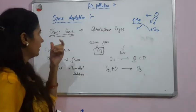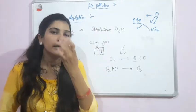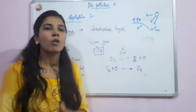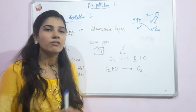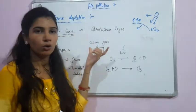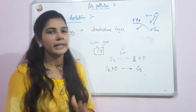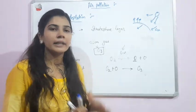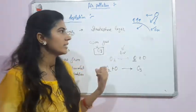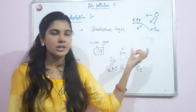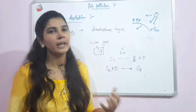But what is happening nowadays in the Antarctica region — the ozone layer there has become very thin due to various harmful gases. This thinning of the ozone layer is called ozone depletion. Due to this, ultraviolet radiation is entering the atmosphere, causing various diseases in living organisms.